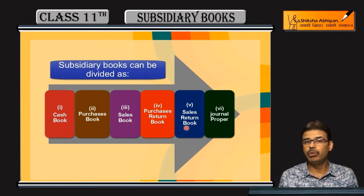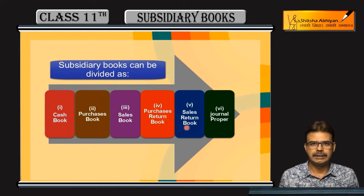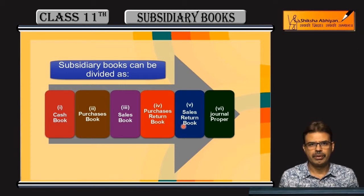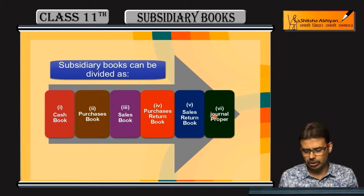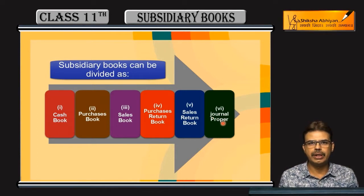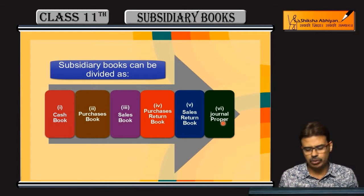Now, there are also many other transactions, like credit purchase of assets or outstanding rent — these do not go into the above books. Transactions that don't fit the special subsidiary books will go to the journal proper.